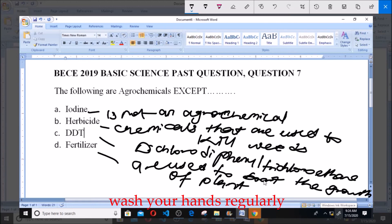So therefore, herbicide, DDT, and fertilizers are agrochemicals, but iodine on the other hand is not an agrochemical. So therefore our answer is iodine. Thank you very much. God bless you. Please do well to subscribe to our YouTube channel. Thank you.